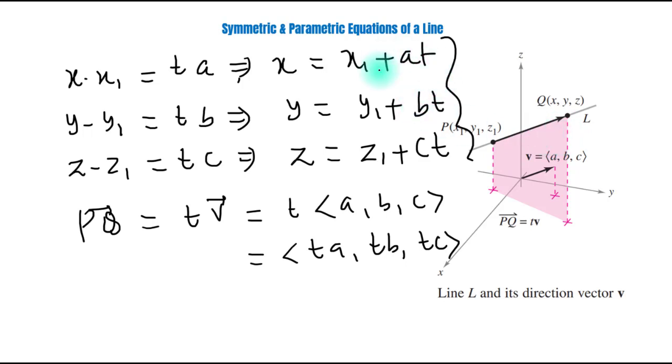Now, we will convert this parametric form into symmetric form. From this equation, we can write t equals x minus x1 upon a.